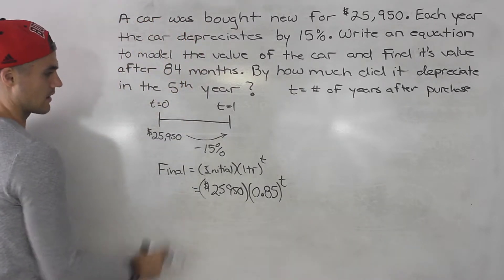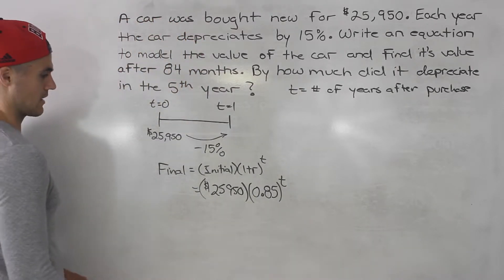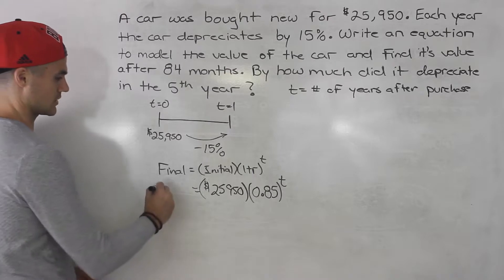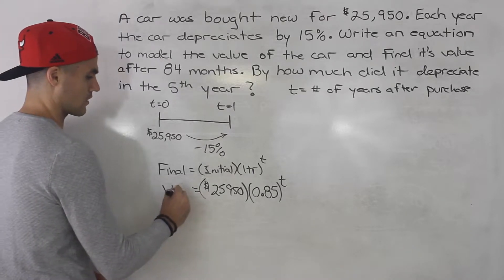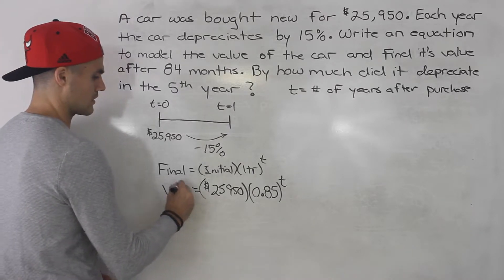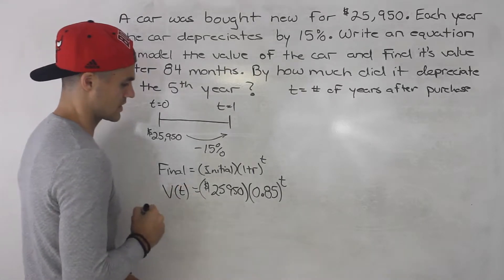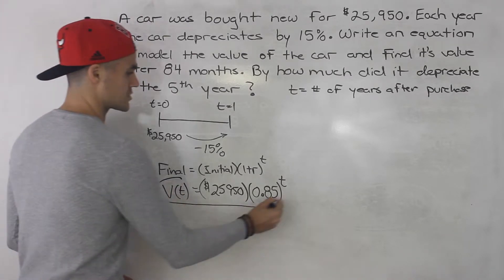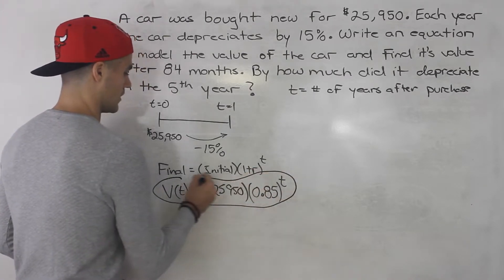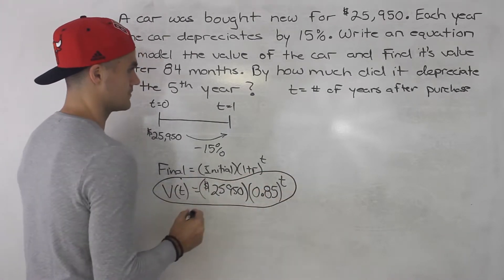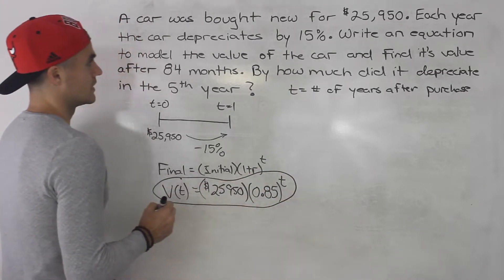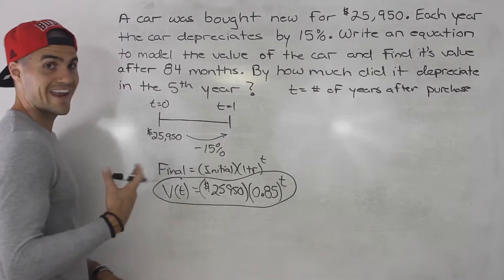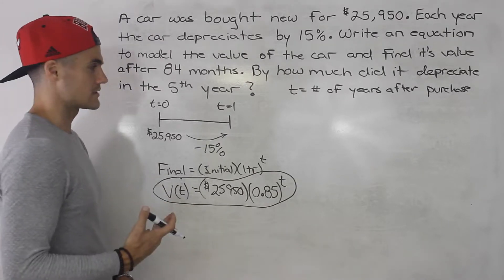That is our function — let's call it V(t), the value of the car given the number of years after it was purchased. That's the first part of the question. The second part asks for the value after 84 months.